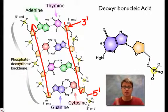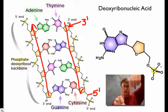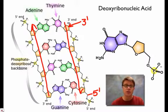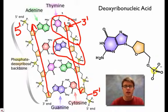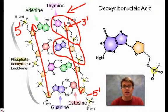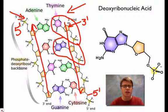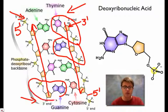DNA is said to be antiparallel — it flows in one direction on one side and the opposite direction on the other side. They're parallel to each other but flowing in opposite directions. So across from the 3 prime end on one side, we have the 5 prime end on the other. This is important because when building DNA and adding a new nucleotide, we can only add it on the 3 prime end — not the 5 prime end. That will be really important when we get to DNA replication.